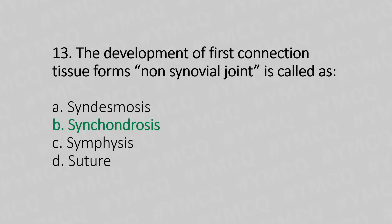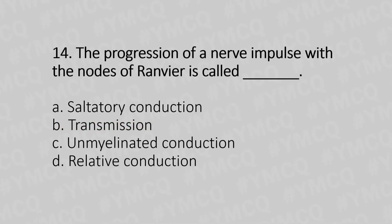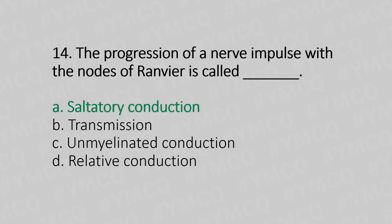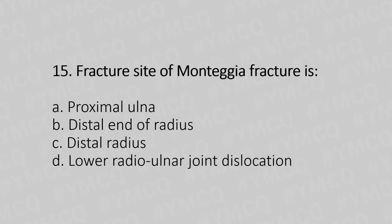Question 14: The progression of nerve impulse from node to node of Ranvier is called — Option A: saltatory conduction. Option B: transmission. Option C: unmyelinated conduction. Option D: relative conduction. The answer is option A — saltatory conduction.